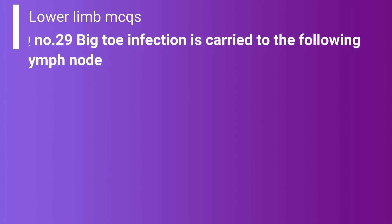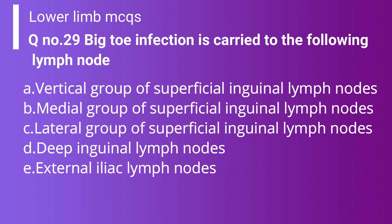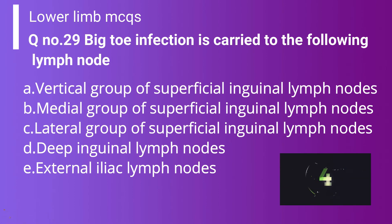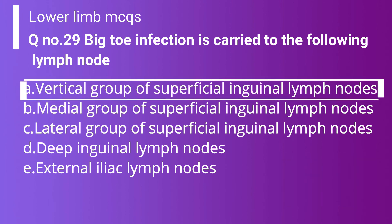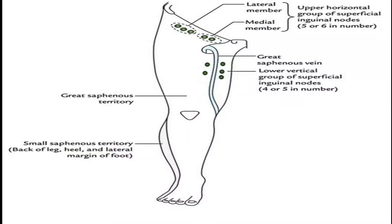Question 29: Big toe infection is carried to which lymph node? Option A: Vertical group of superficial inguinal lymph nodes. Option B: Medial group of superficial inguinal lymph nodes. Option C: Lateral group of superficial inguinal lymph nodes. Option D: Deep inguinal lymph nodes. Option E: External iliac lymph nodes. The correct answer is Option A — from the toe, lymph drainage goes to the vertical group of superficial inguinal lymph nodes, as shown in the picture.